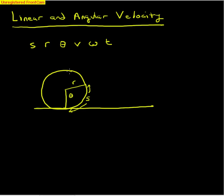In our picture here we have a circle of radius r, the angle theta is indicated, and s stands for the arc length corresponding to that angle theta on this circle. V stands for linear velocity and omega, which looks like a w, is the angular velocity, t being time.